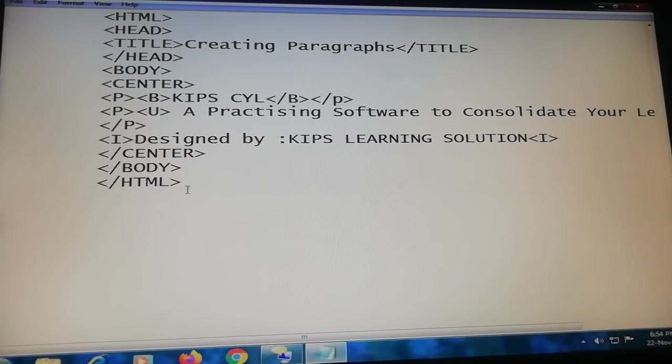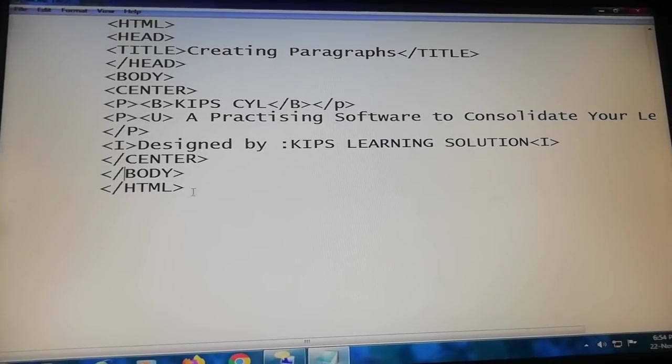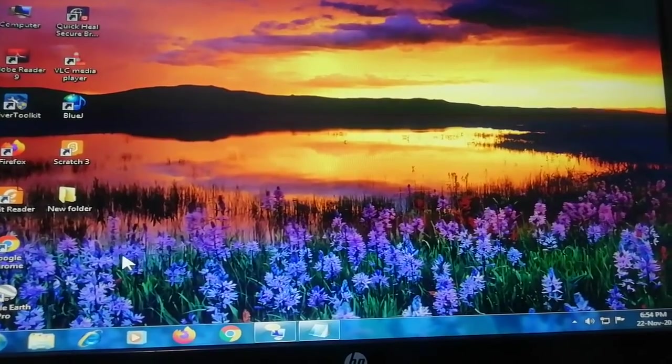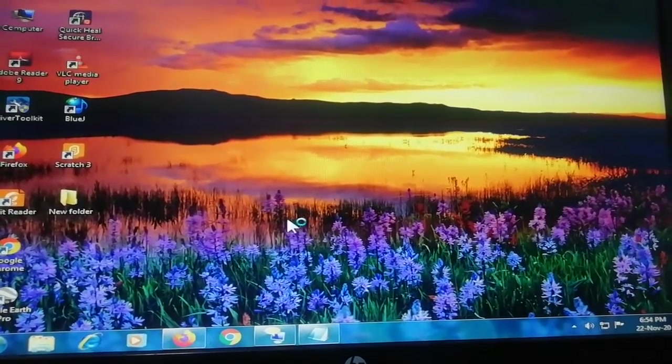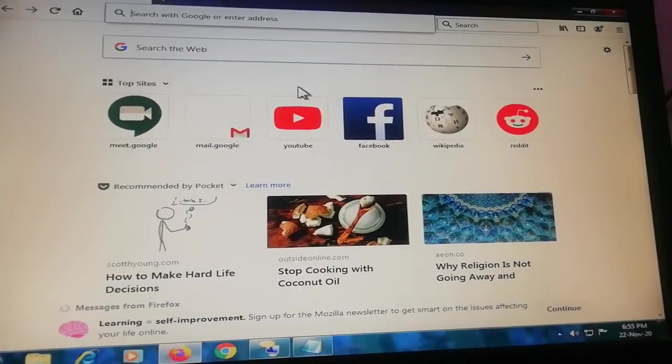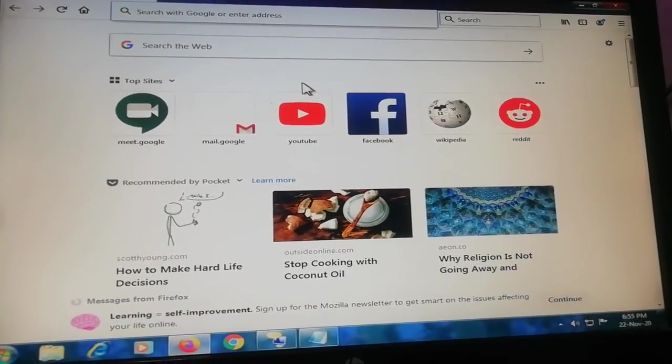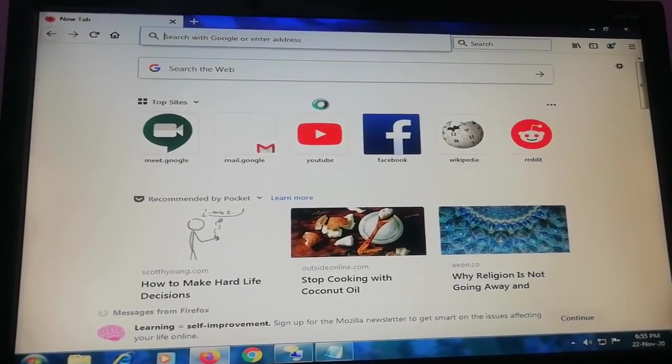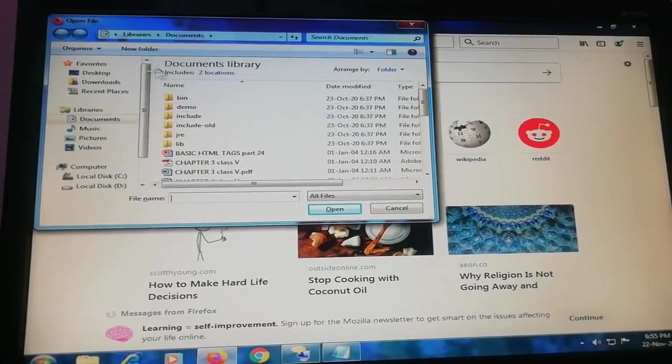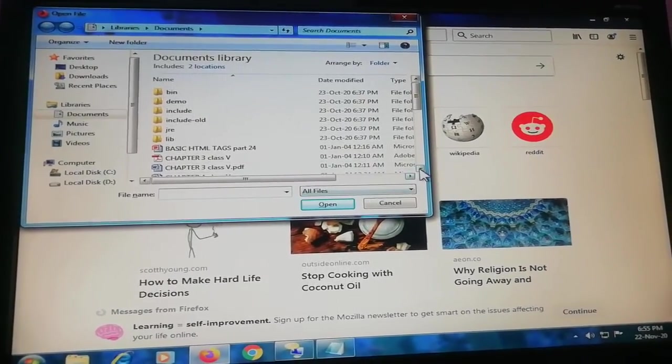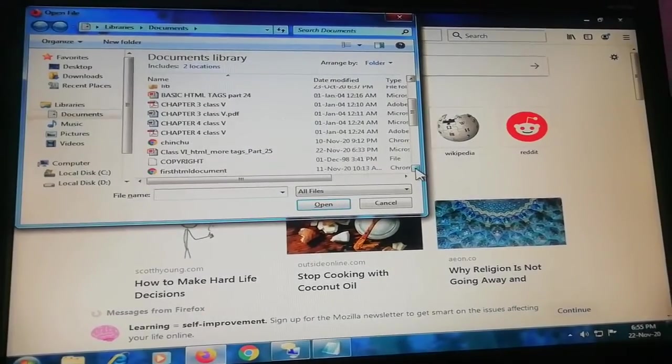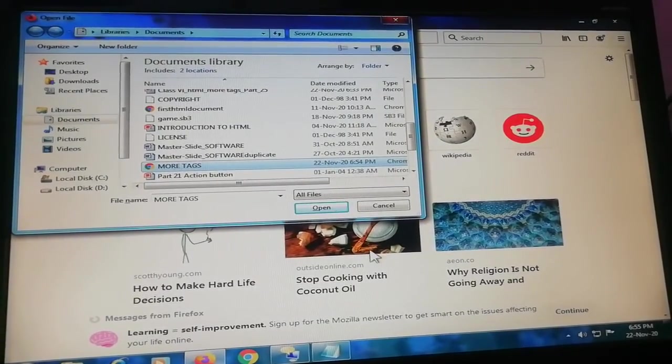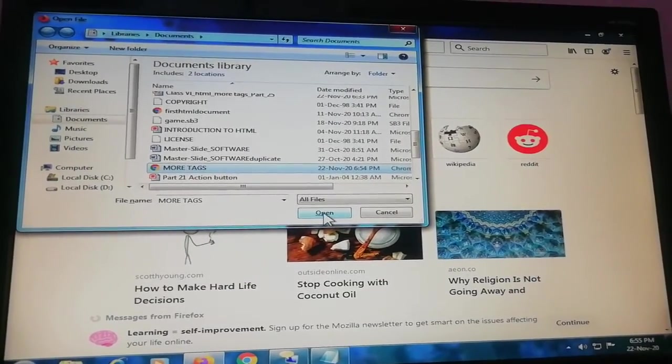Now I will show you how it will appear on the web page. So first we will open the web browser Mozilla Firefox. Now here this is the main screen of Mozilla Firefox. To open your HTML document you will press Ctrl plus O. As a response, the open dialog box will come in which you will select your HTML file. For example, I have selected this file that I created just a few minutes before. Then click to open.